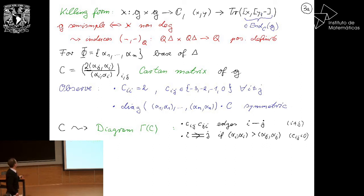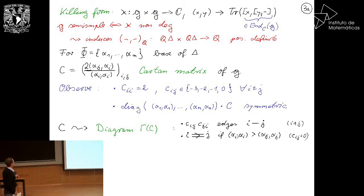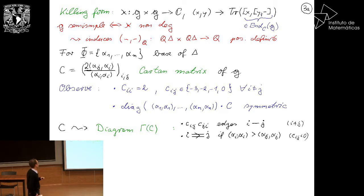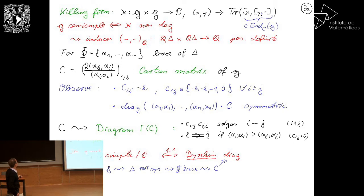From the Cartan matrix one can encode the information in a diagram: between two different nodes we draw C_{ij} times C_{ji} edges — always a positive number since off-diagonal entries are both negative or both zero. Additional information is given by an arrow indicating which root is longer than its neighbor.